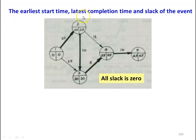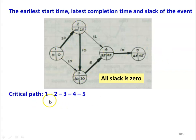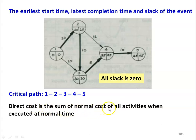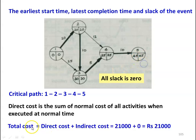The earliest start time, latest completion time, and the slack of all the events are shown in the network. The activities are 1-2, 1-3, 2-3, 3-4, 2-4, and 4-5. The critical path is 1-2, 2-3, 3-4, and 4-5. The normal time is 45 days for the network. The direct cost is the sum of the normal costs of all activities, which equals 21,000. With indirect cost equal to 0, the total cost is 21,000.